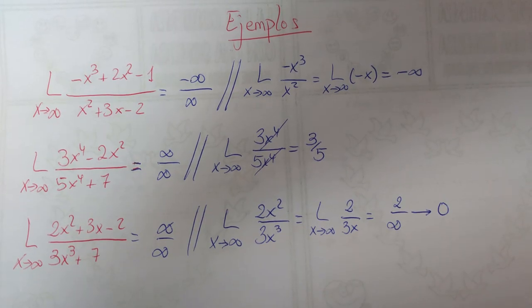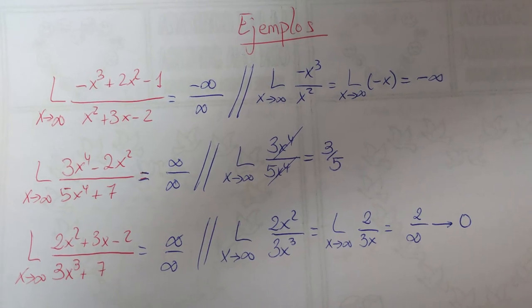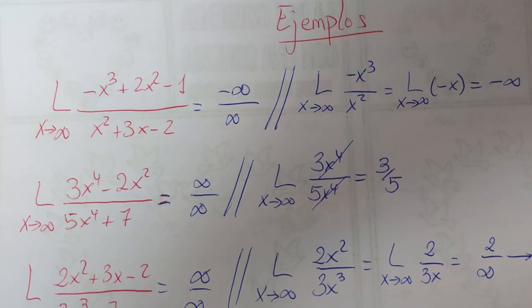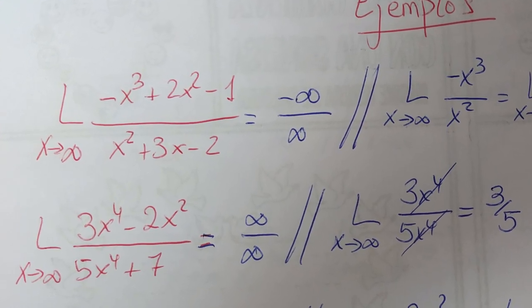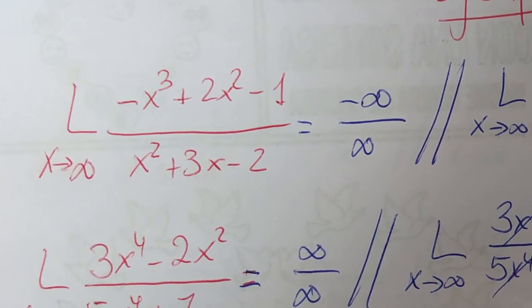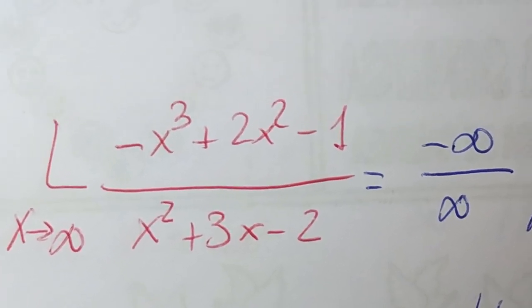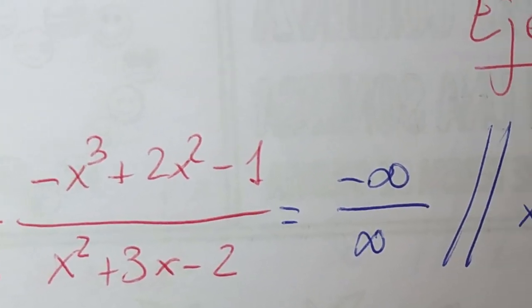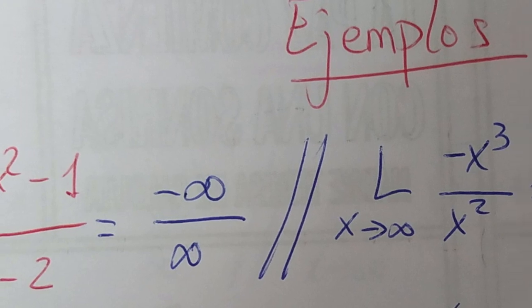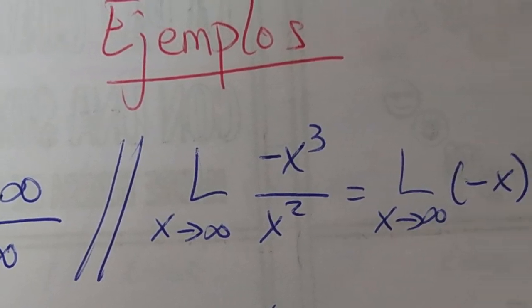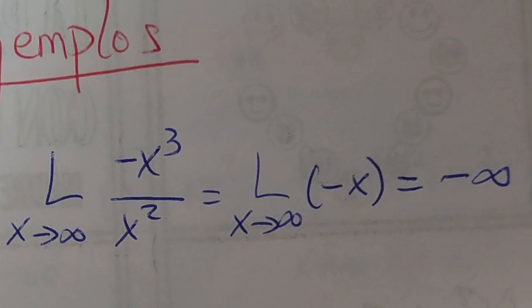Primer ejemplo: límite cuando x tiende a infinito de (-x³ + 2x² - 1) / (x² + 3x - 2). Sustituimos por el infinito y nos quedaría -∞/∞. Cogemos las x de mayor grado del numerador y del denominador: -x³ partido de x², aplicamos propiedades de las potencias y nos quedaría el límite cuando x tiende a infinito de -x, que es menos infinito, que ese sería el resultado.